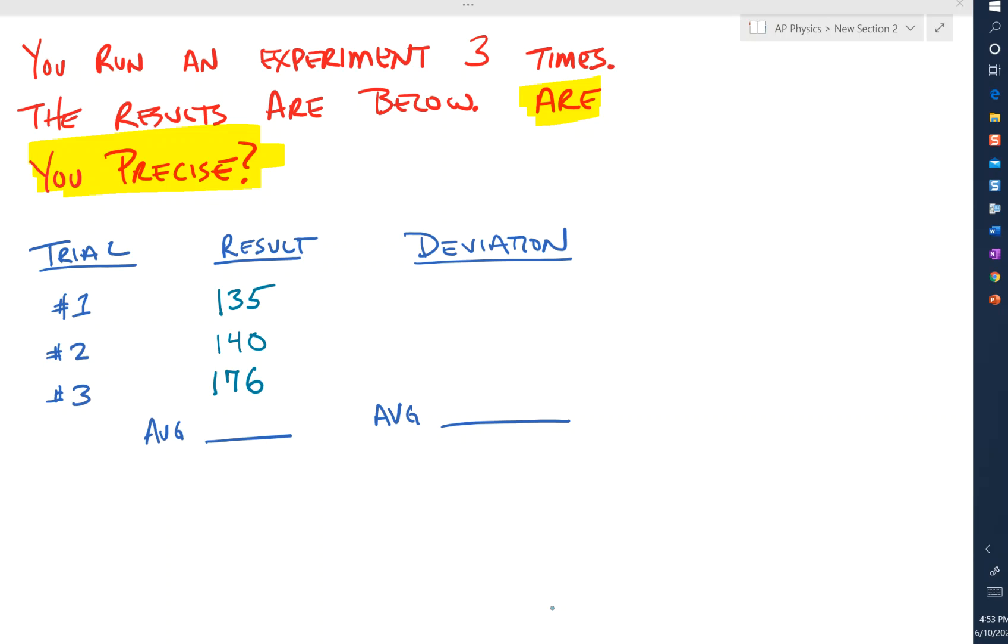We're trying to find out if those are close enough together to be considered precise. They may not be accurate. The right number might be 6,000—I don't know. But that's not the question for here. So the first thing you do is find the average.